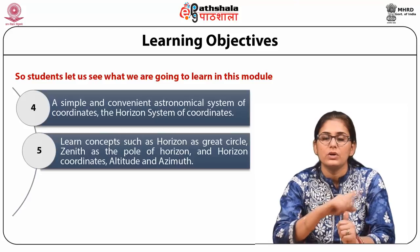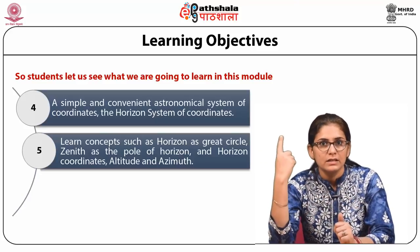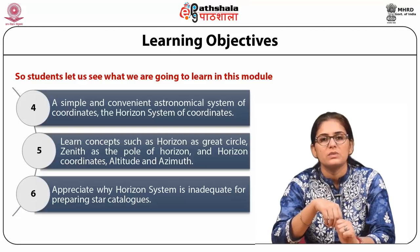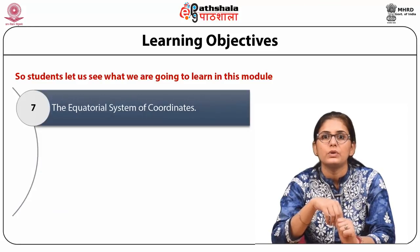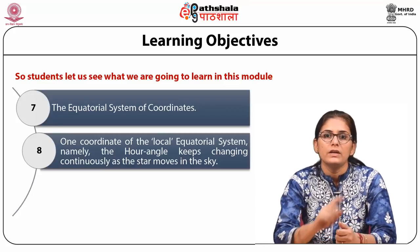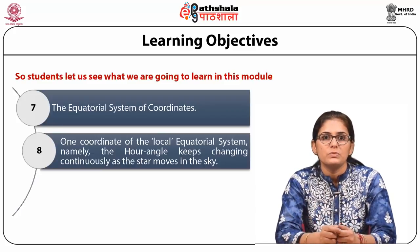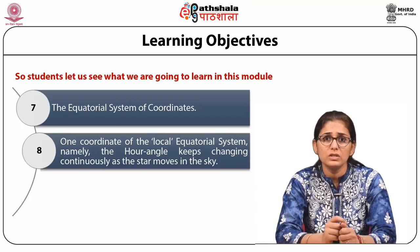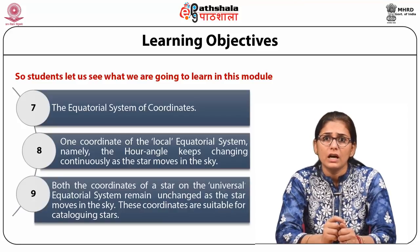We will learn concepts such as the horizon, the great circle, zenith, the pole of horizon, and horizon coordinates — altitude and azimuth. We will appreciate why the horizon system is inadequate for preparing star catalogues. We will also understand the equatorial system of coordinates, including the hour angle which keeps changing continuously as the star moves in the sky, and the universal equatorial system where both coordinates remain unchanged.